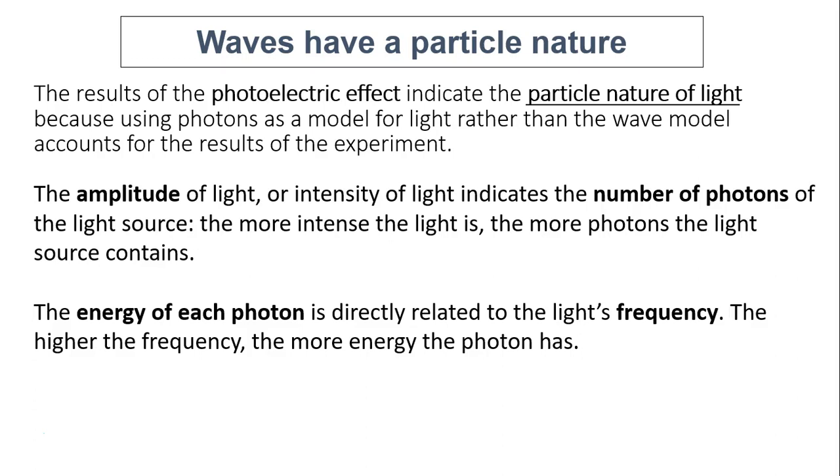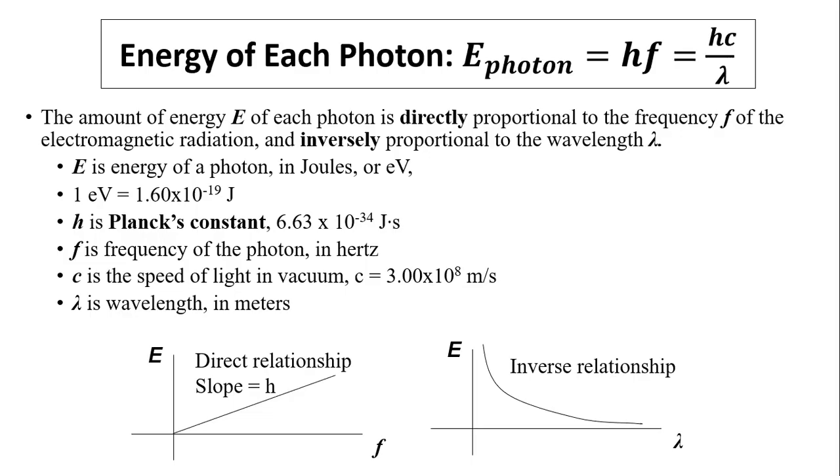So, this theory basically is saying wave has a particle nature. The result of photoelectric effect indicates particle nature of light. Because using photon as model for light rather than the wave model accounts for the results of the experiment. So, you'll probably say, wait a second, I thought amplitude is energy. Yes, amplitude of light is energy. Amplitude of light or intensity of light indicates a number of photons. So, the brighter the light is, the more photons you have. The more intense the light, the more photons. Now, the energy of each photon is directly related to the light frequency. So, the higher frequency you have, the more energy you have. For example, gamma rays that has tremendous amount of energy. That's why we try to stay away from it. Even when we have x-rays, you have to protect yourself. Because x-ray has a very high frequency. So, it has lots of energy.